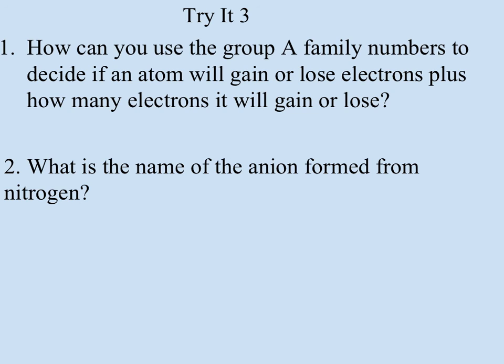So to wrap up, a couple questions. How can you use the group A family numbers to decide if an atom will gain or lose electrons plus how many electrons it will gain or lose? So you can look at the group A family numbers and see if they're to the left or the right of the zigzag line. And we can assume metals will lose and nonmetals will gain. And then how many will it gain or lose? Because if it's a metal, it's going to lose all of them and if it's a nonmetal, it's going to gain enough to get a total of 8 in that outer shell. And then what is the name of the anion formed from nitrogen? That would be changed to nitride. Thank you.